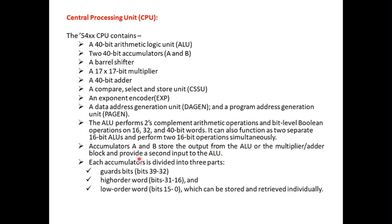There are two accumulators, A and B, which store the output from the ALU, the multiplier, or the adder block, and provide a second input to the ALU. Each accumulator is divided into three parts: bits 32 to 39 are reserved for guard bits, bits 31 to 16 are the higher order word, and bits 0 to 15 are the lower order word, which can be stored and retrieved individually.